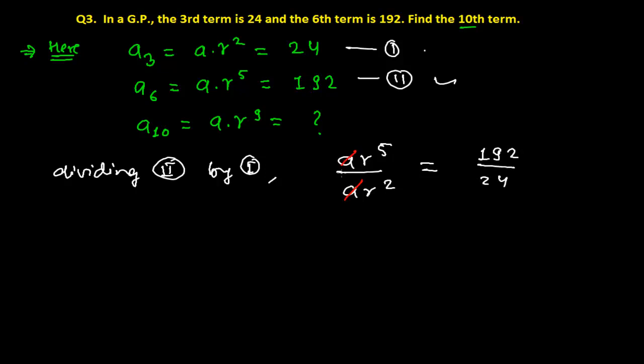Now here we can easily cancel out a and a. And then see here, there are two r's and there are five r's, so we'll be left with three r's. And here if you see, 24, if I cut this by 2, I'll get 2, 12, 24, and 96, 120, 192. Again, 96 if I cut by 2, I will get 48. And if I cut 12 by 2, it will be 6.